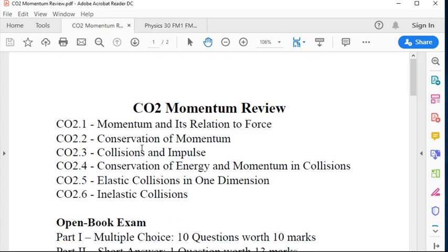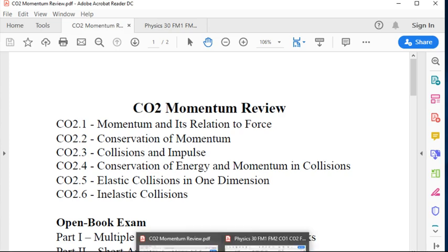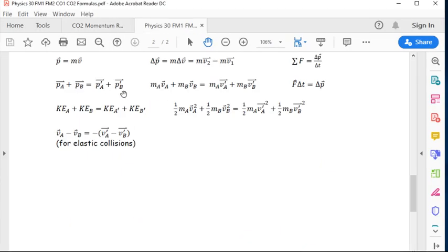In CO2.1, then we looked at CO2.2 conservation of momentum and we looked at questions involving that. Right over here, momentum before equals momentum after. We looked at momentum of two objects before versus after with the prime. P is equal to M times V.